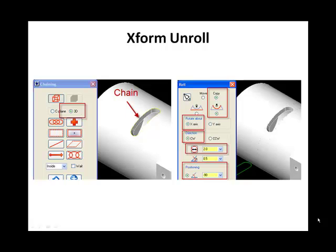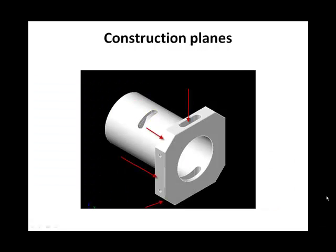Click OK and unshade your geometry to see the flat pattern. This part requires four construction planes: top, 45 degrees, 90 degrees, and 135 degrees.